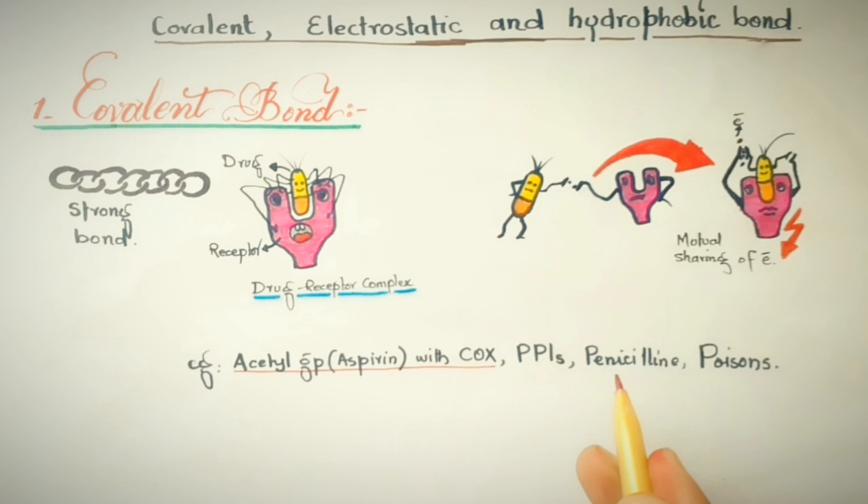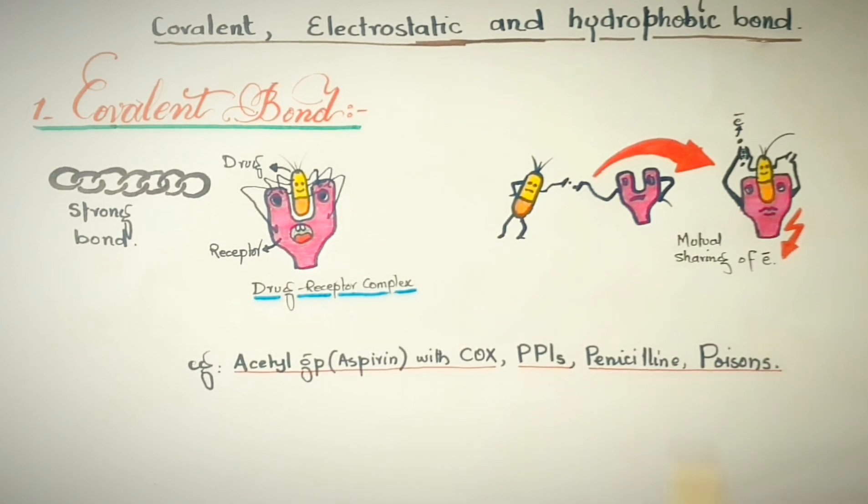So the drugs which form these types of bonds with receptors include the acetyl group of aspirin with cyclooxygenase enzymes, and proton pump inhibitors bonding with the hydrogen-potassium ATPase, and penicillin, and more importantly some poisons make these types of bonds with the receptors. Moreover, the action of these compounds do not depend on half-life and minimum effective concentration of the drug in the body. They are often fully eliminated or disappeared from the blood but still have their effect on the body due to strongly bonded molecules with the receptors.